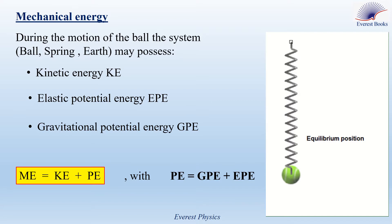ME, the mechanical energy, equals KE, the kinetic energy, plus PE, the potential energy. Note that in general, PE refers to all types of potential energy in the system, such as magnetic, electric, gravitational, elastic, etc. But in our curriculum, we focus on gravitational potential energy and elastic potential energy as the two types of potential energy in the system.